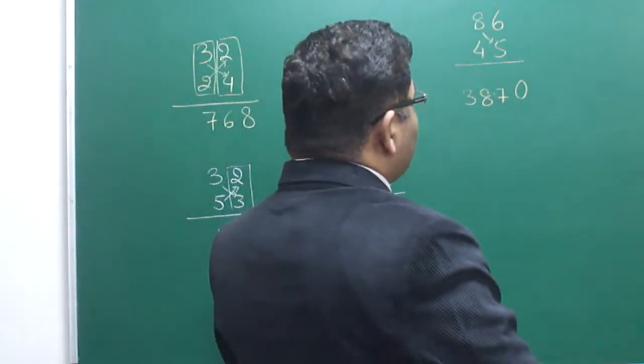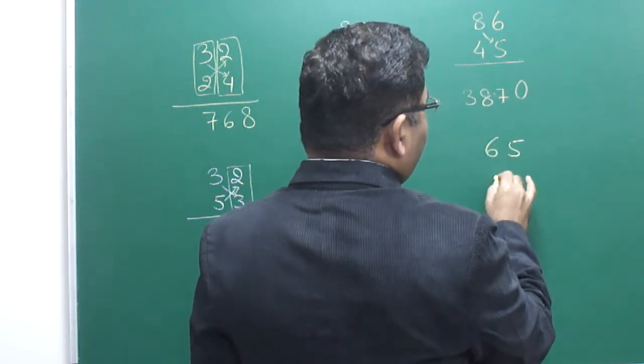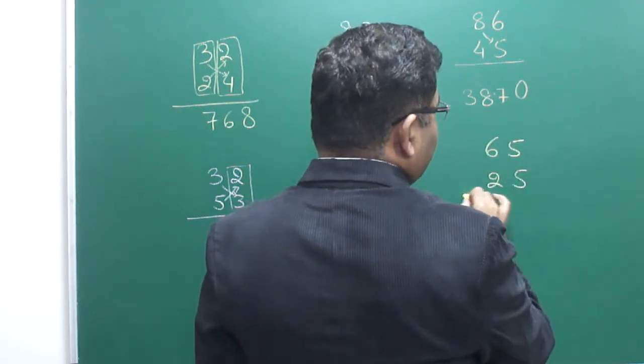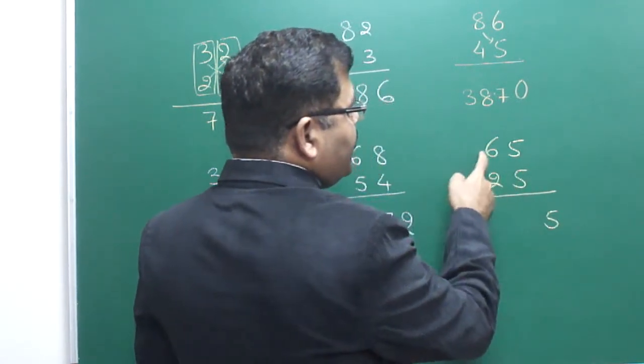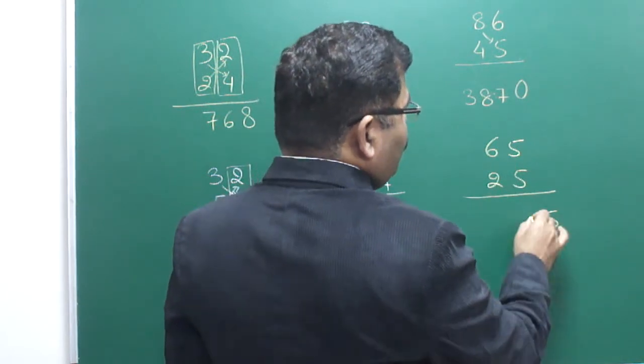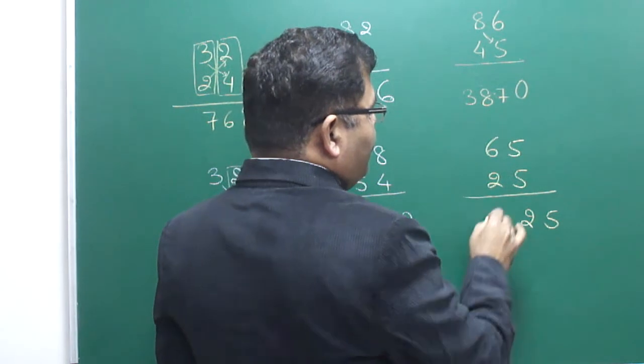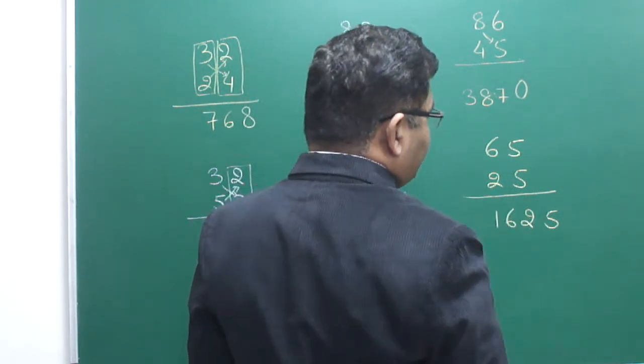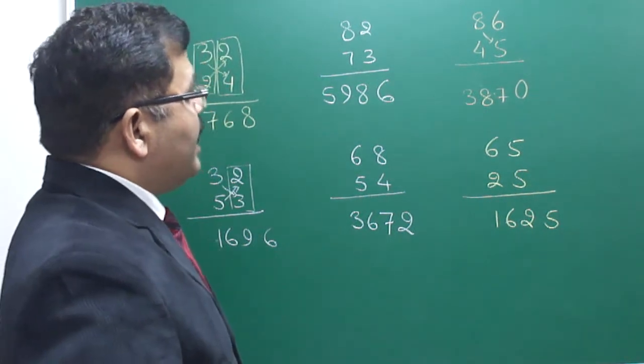So our question of this category can be solved by using this fact. 65 x 25. 5 x 5 = 25, carry 2. 6 x 5 = 30 plus 10, 40. 40 and 42, carry 4. 6 x 2 = 12 and 4, 12 plus 4 is 16. So our answer will be 1625.